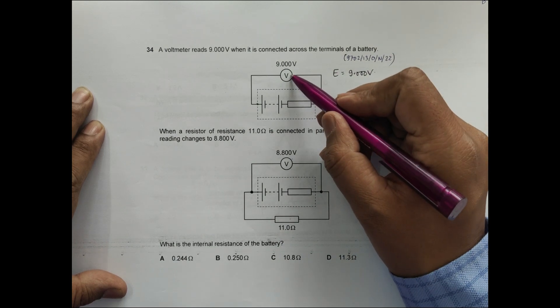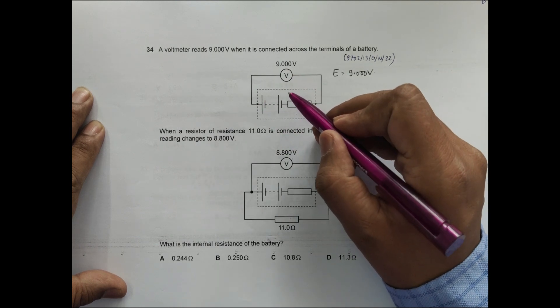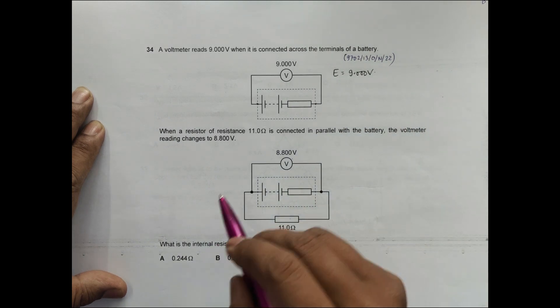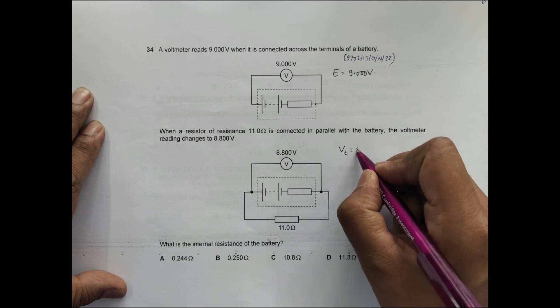Here it is simply measuring the EMF of the source because no other resistors are available. Now when we do this, it is measuring the terminal potential difference V_T equal to 8.800 volt.